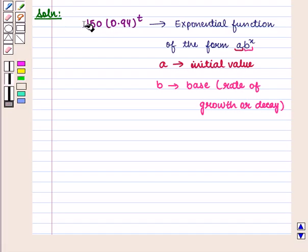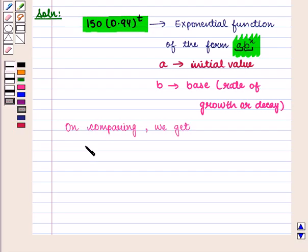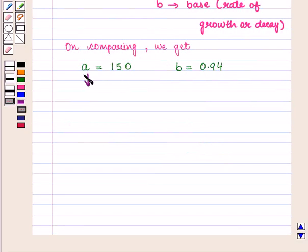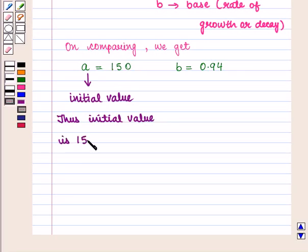Now if we compare the two functions, we get the value of a as 150 and the value of b as 0.94. So here we can say that a, which is the initial value, is 150. Thus we can say that the initial value is 150 grams.